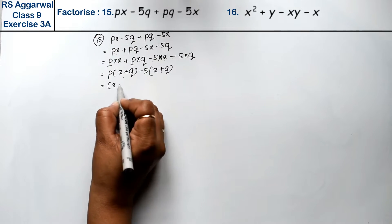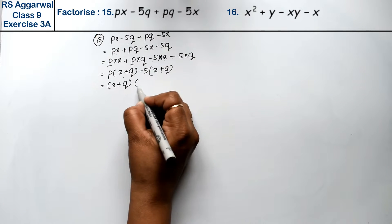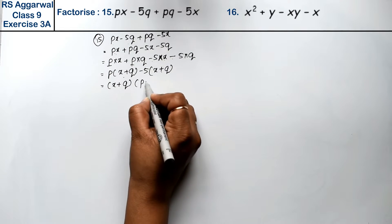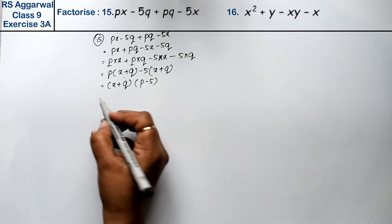Now x plus q is common, so what will remain? p minus 5 is the answer.